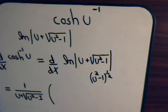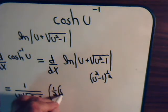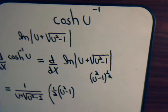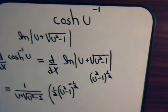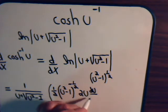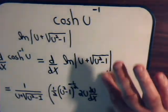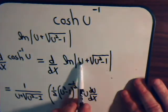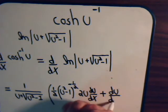When we take this derivative it's going to be one-half times u squared minus 1 to the negative one-half, times the derivative of what's inside the brackets, which is 2u times du/dx. We're taking the derivative with respect to x. Then we also have plus du/dx from the derivative of the u term.